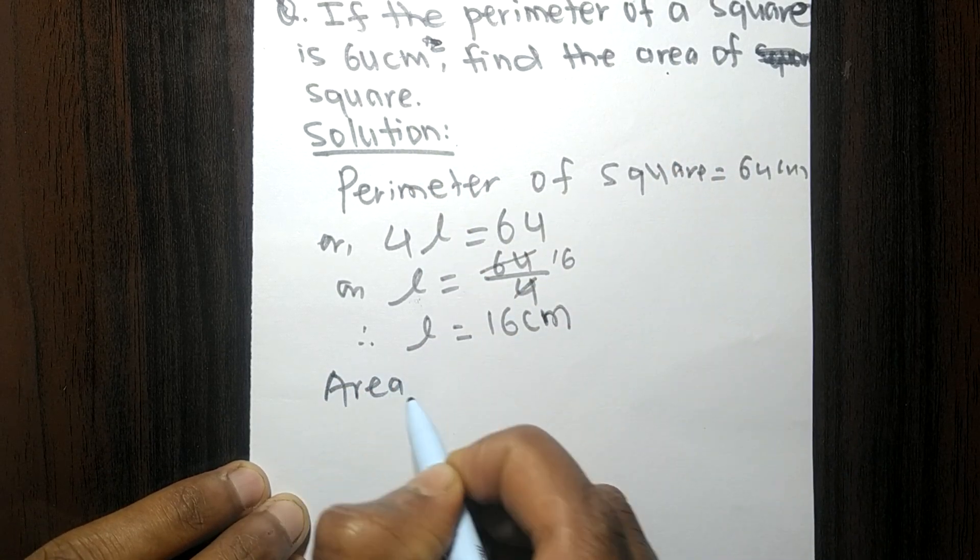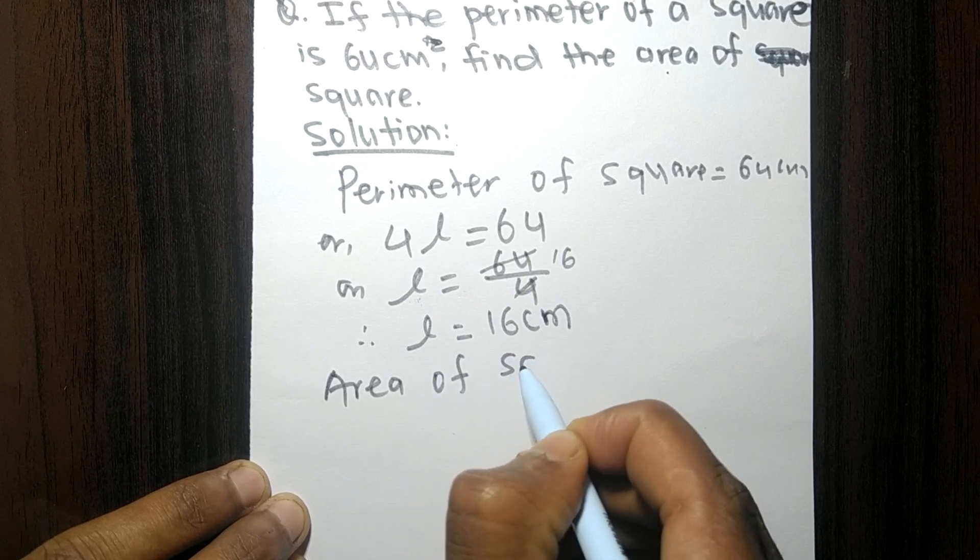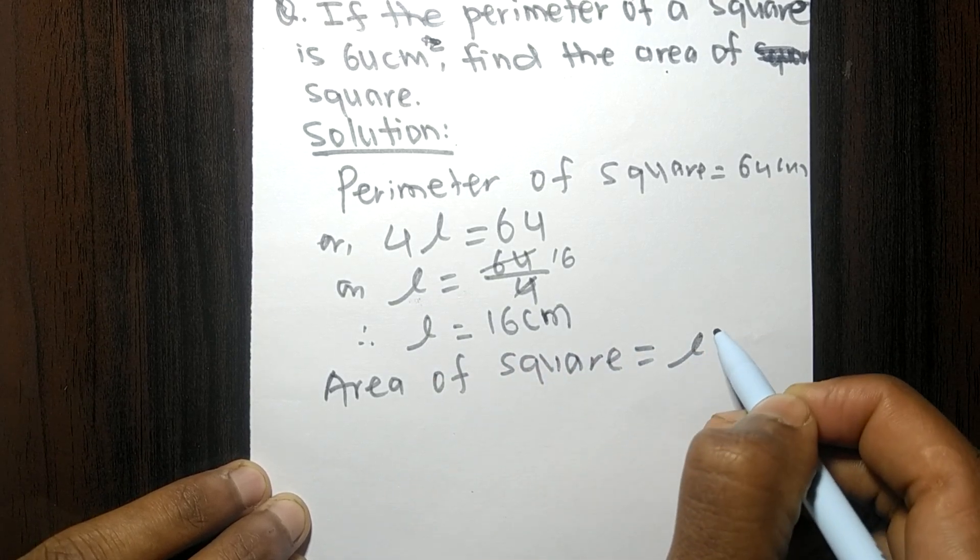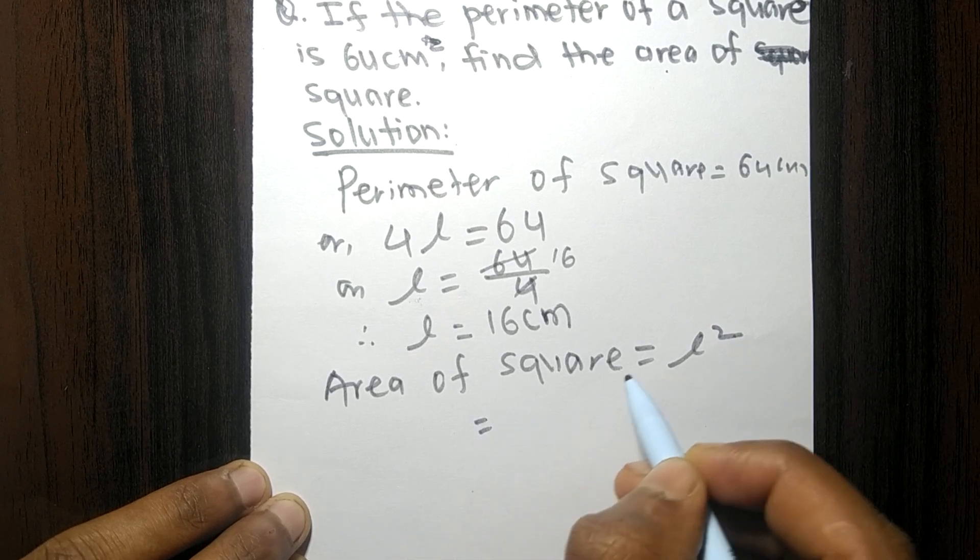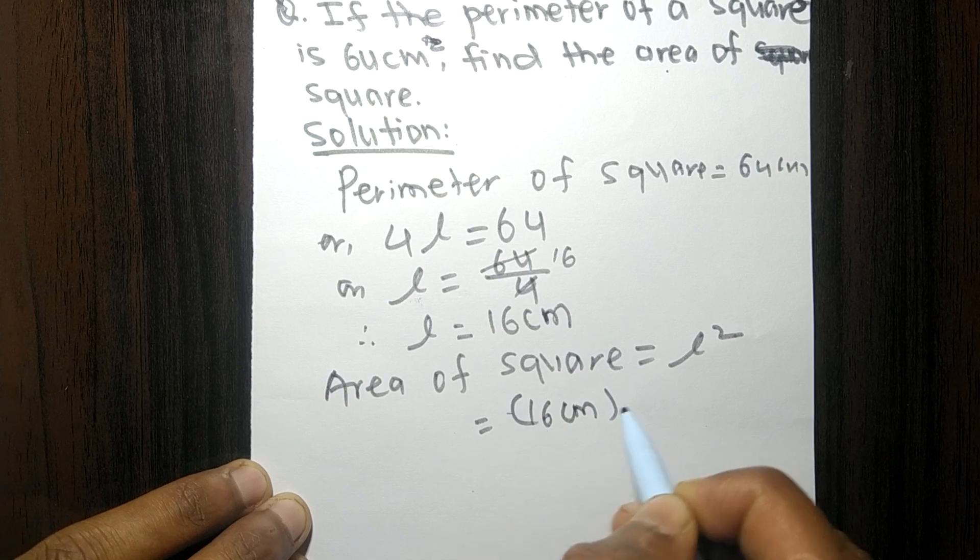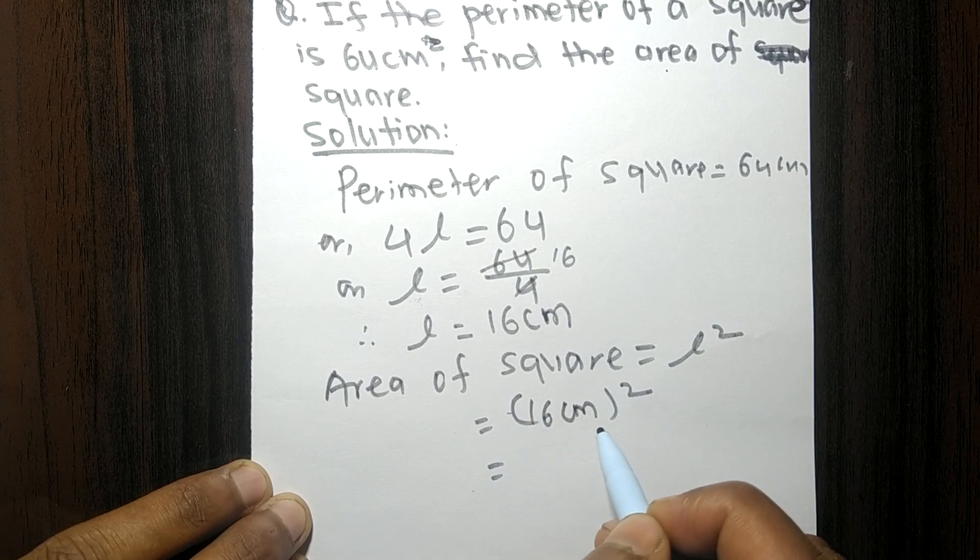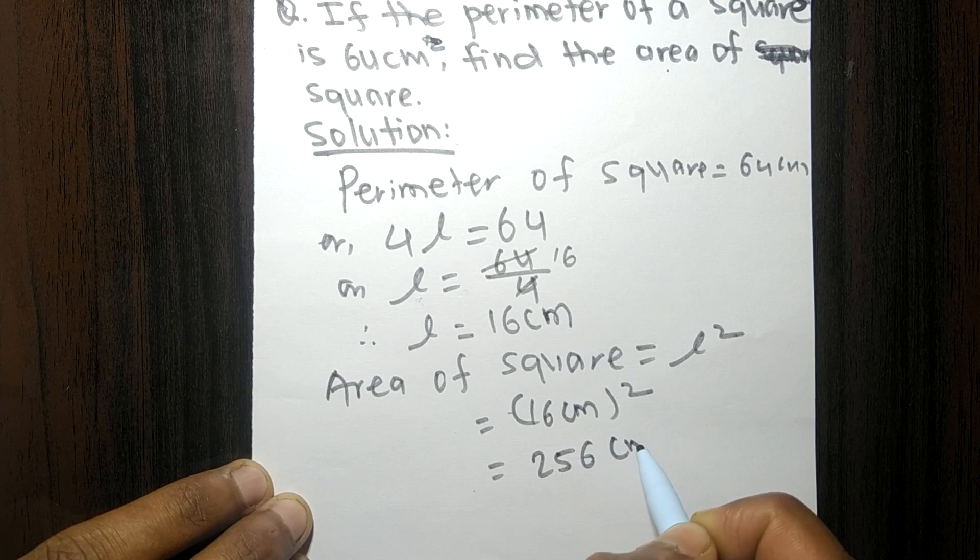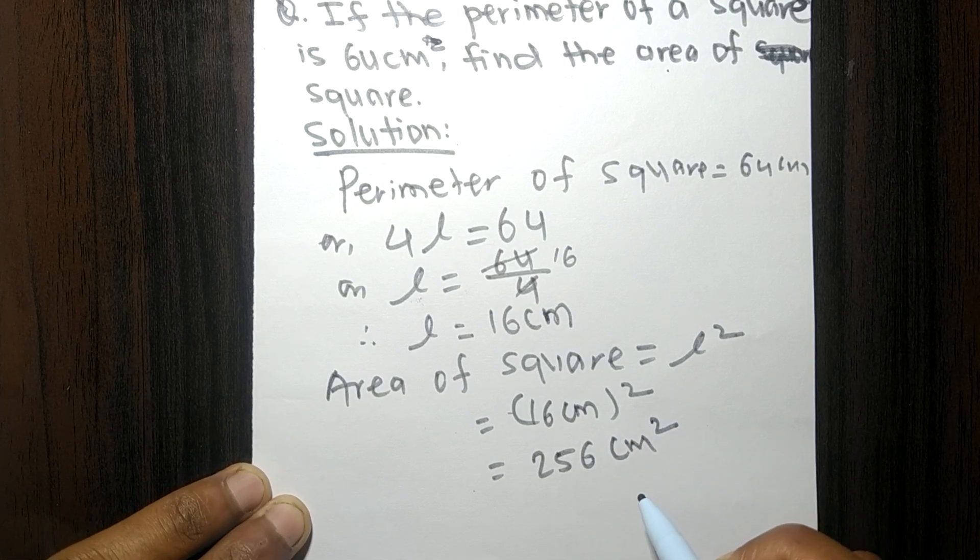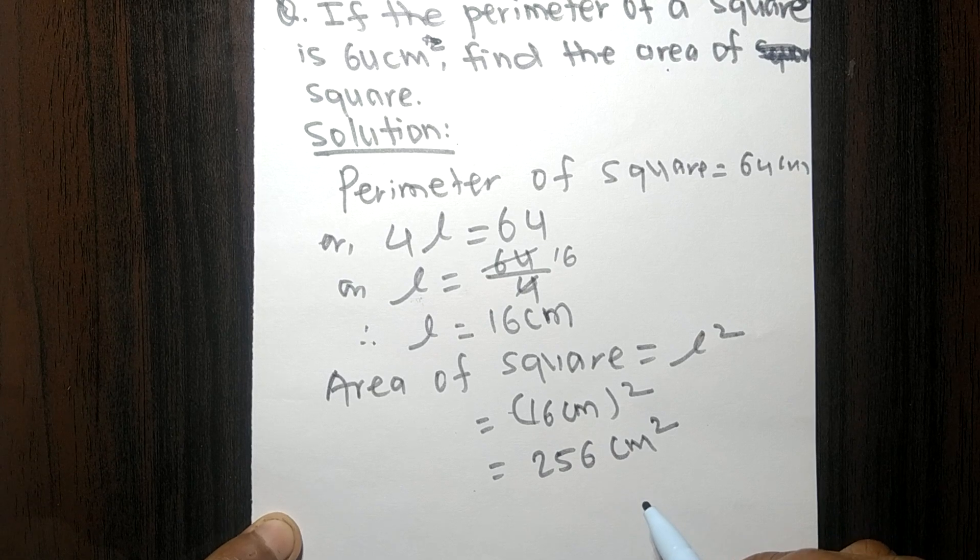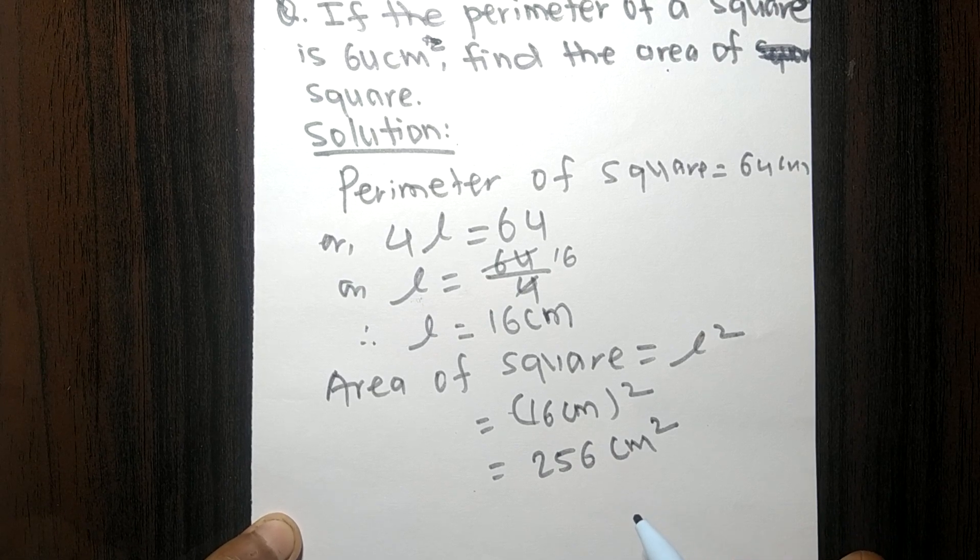Area of a square, its formula is l squared. So length we have is 16 centimeters, so 16 centimeters squared. It is equal to 256 centimeters squared. So area of the square is 256 centimeters squared.